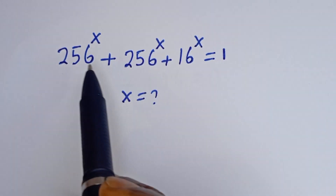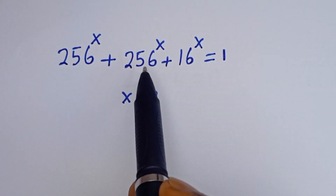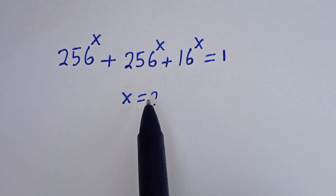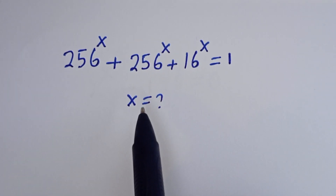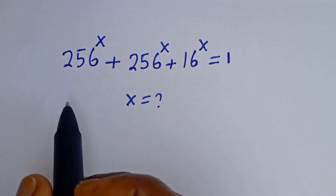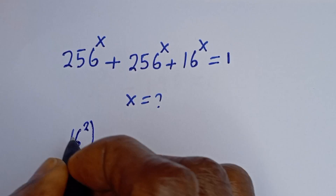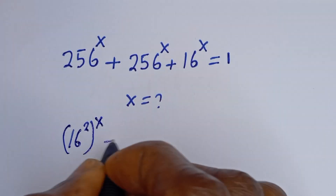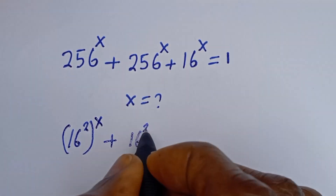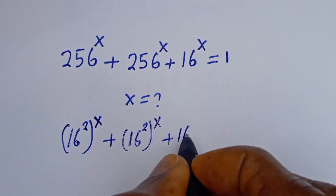Hello. How to solve for s in this equation: 256 to the power of s plus 256 to the power of s plus 16 to the power of s is equal to 1. If you look at this, 256 to the power of s can be written as 16 squared to the power of s.